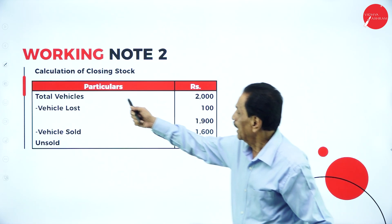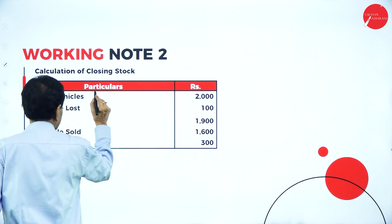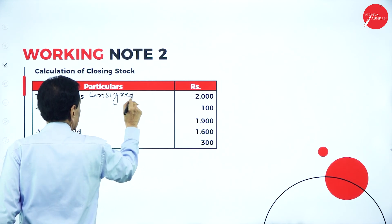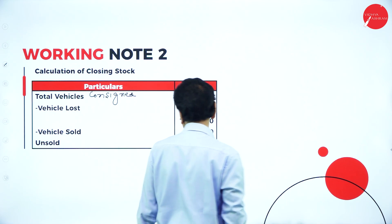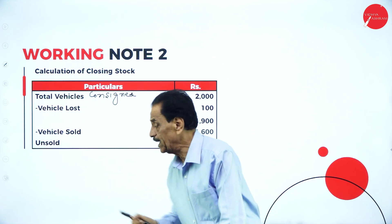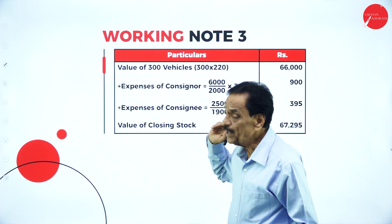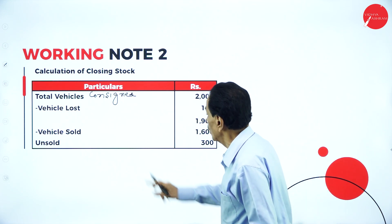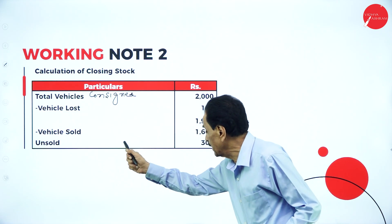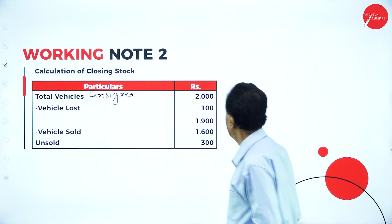Calculation of closing stock in units: Total vehicles consigned = 2,000 minus vehicles lost = 100, leaving 1,900. Minus vehicles sold = 1,600. Therefore, unsold vehicles = 300 units.